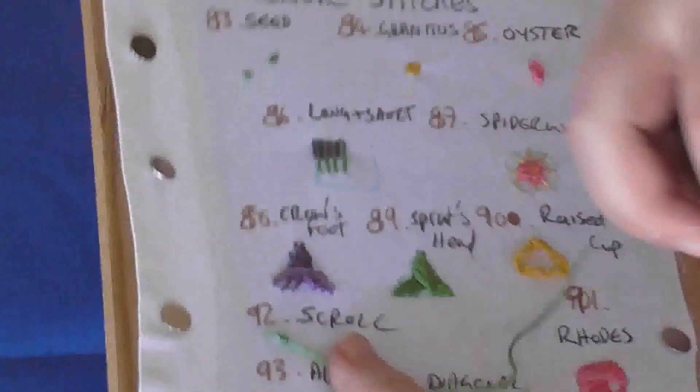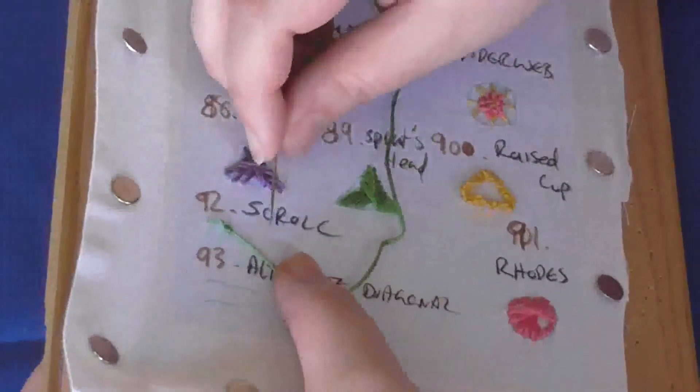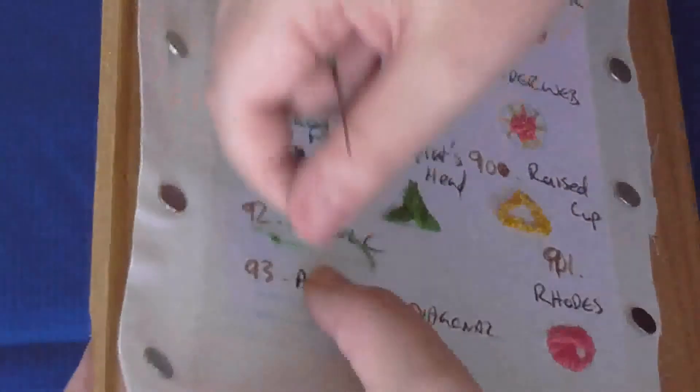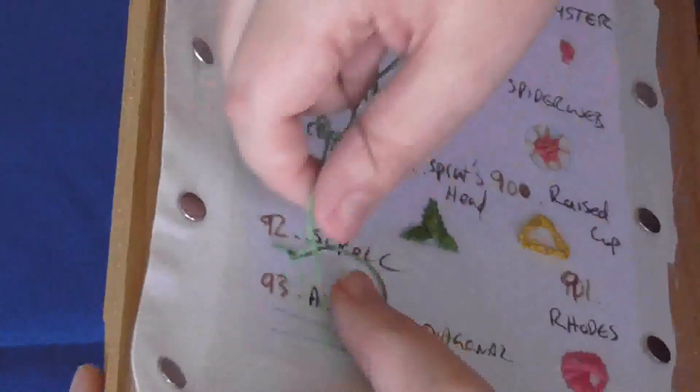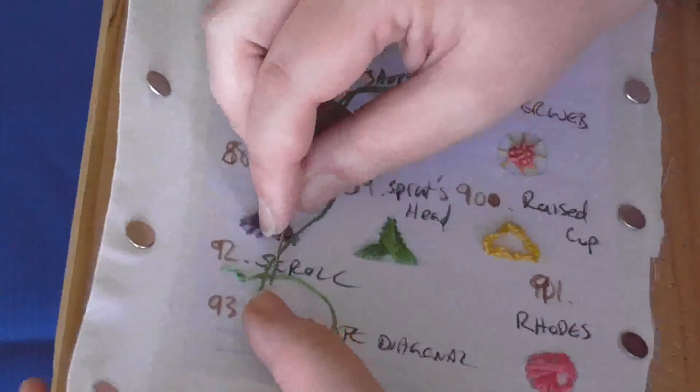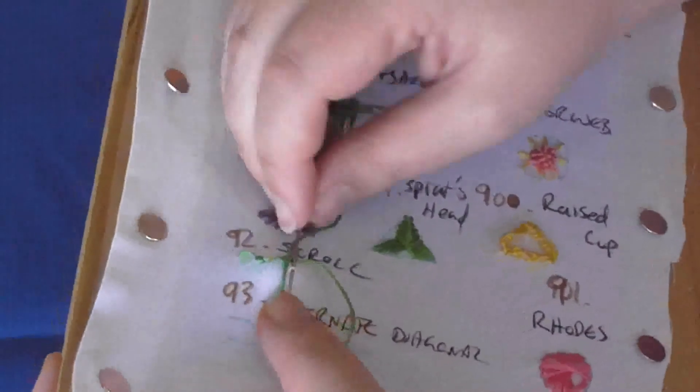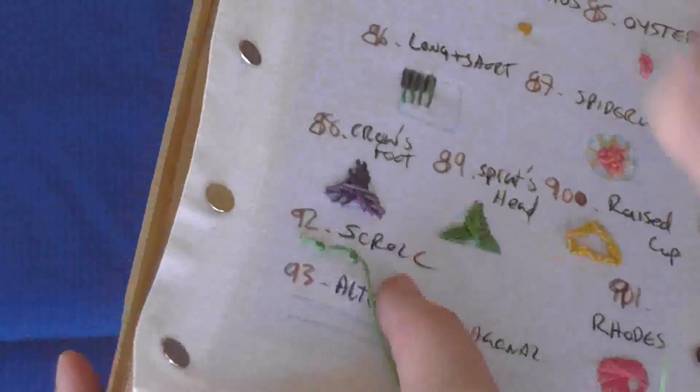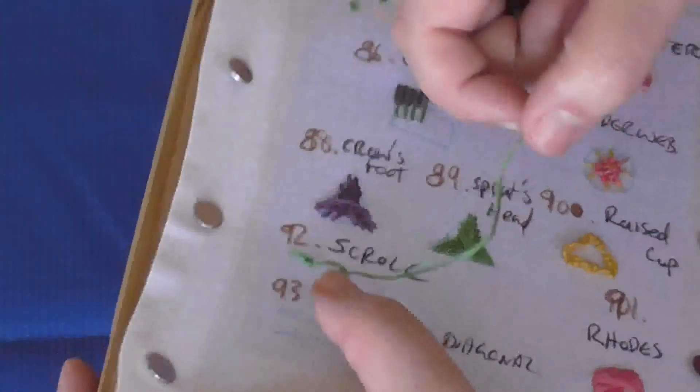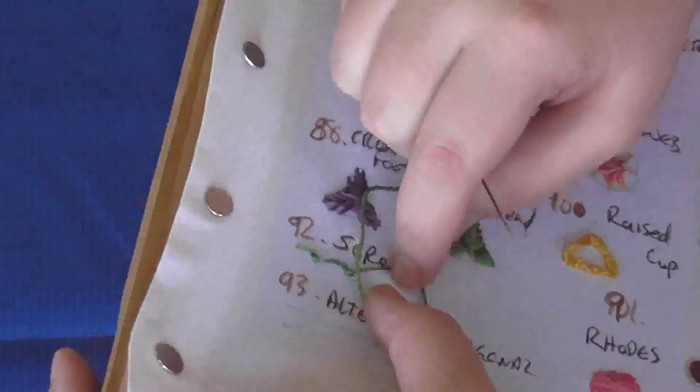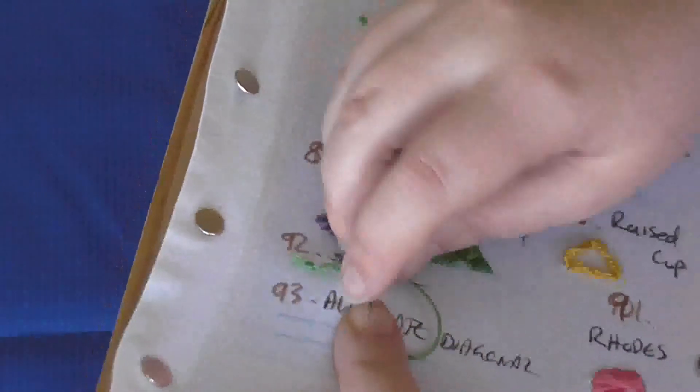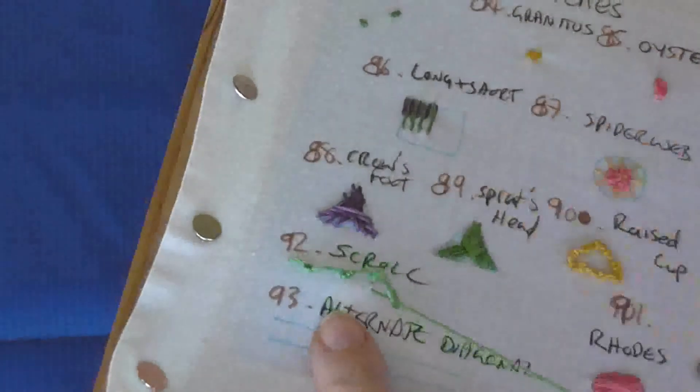I'm going to continue like this because it's easier to work in this direction for me. Make a loop of thread, take a tiny stitch, and then pull it through like that. Make a loop, a tiny stitch, and then pull it through.